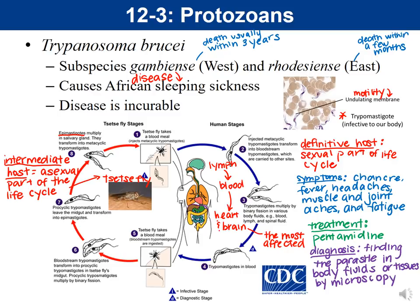The cycle continues when the trypomastigote develops in humans and is present in the blood. Another tsetse fly takes a blood meal, ingesting the trypomastigote, which then undergoes development into the epimastigote and is transmitted back to humans. This cycle is entirely dependent on tsetse flies, which is why the disease is only found in places where tsetse flies are present — in Africa.